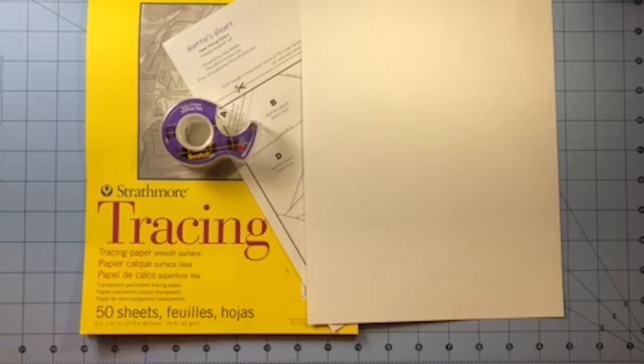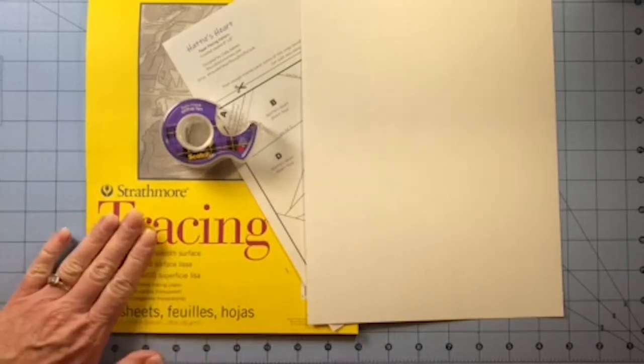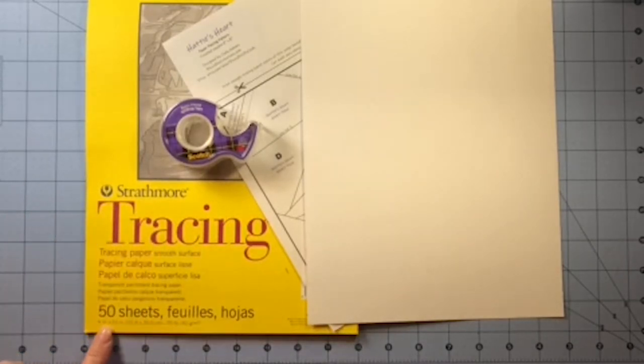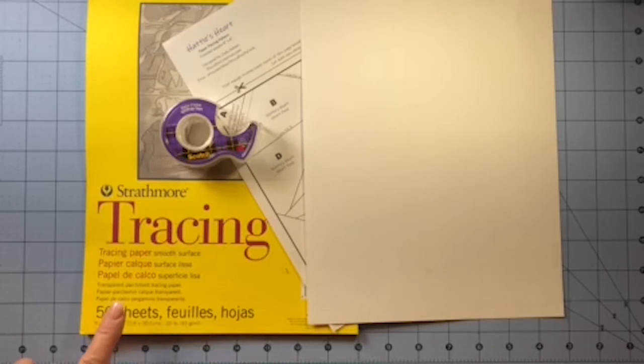Here are the supplies you'll need to copy or print on tracing paper. First of all you'll need tracing paper and you'll notice that this comes in a pad of 9 by 12 inch pieces. It will have to be cut down to eight and a half by 11.